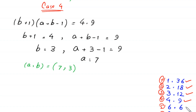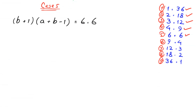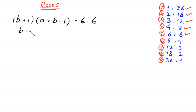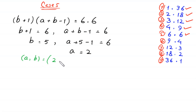In case 5, we set (b plus 1)(a plus b minus 1) equal to 6 times 6. So b plus 1 equals 6 and a plus b minus 1 equals 6. From here b equals 5, and substituting: a plus 5 minus 1 equals 6, so a equals 2. Fifth pair of solutions: (a, b) = (2, 5).